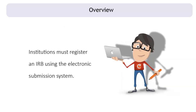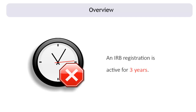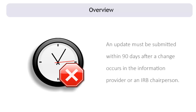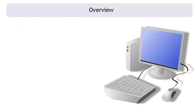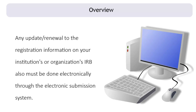Institutions must register an IRB using the electronic submission system. An IRB registration is active for three years. An update must be submitted within 90 days after a change occurs in the information provider or an IRB chairperson. After processing the initial registration, any update or renewal to the registration information must also be done electronically through the electronic submission system.